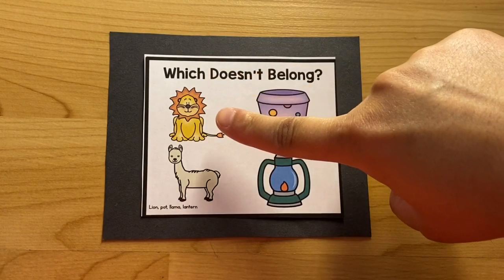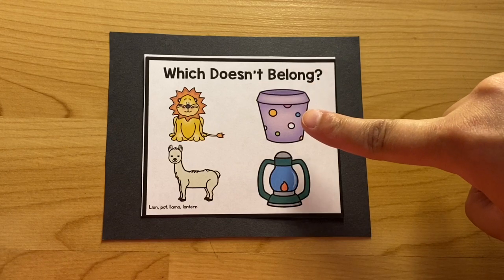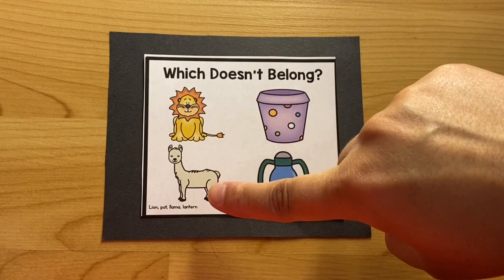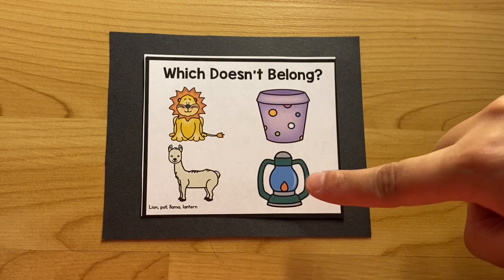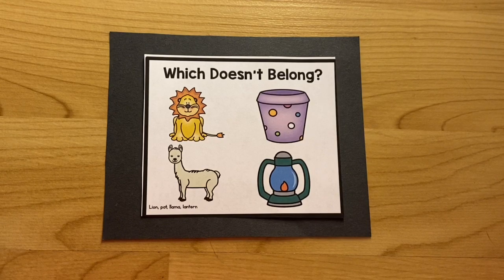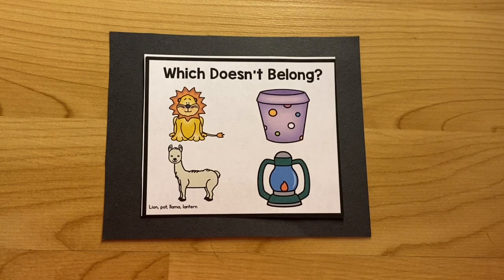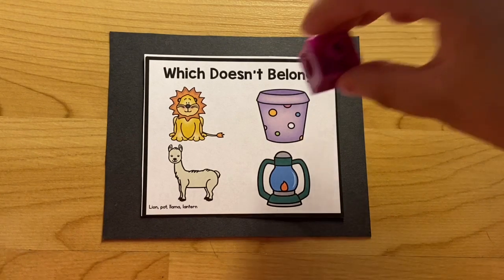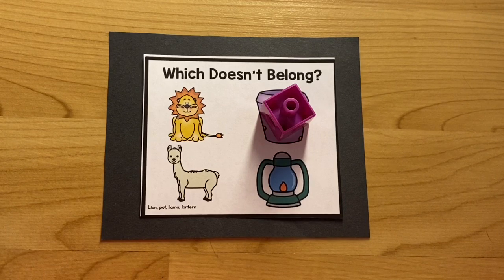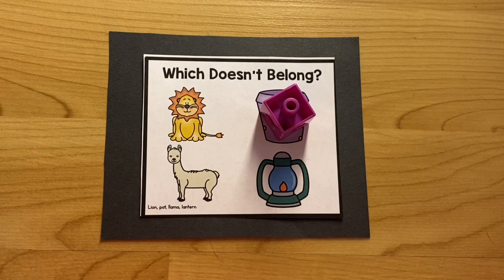Last one. Lion. Pot. Llama. Lantern. Which word doesn't belong? Pot. That's right. Pot doesn't belong because pot begins with the sound P. And the rest of the words begin with the sound L. Good job.